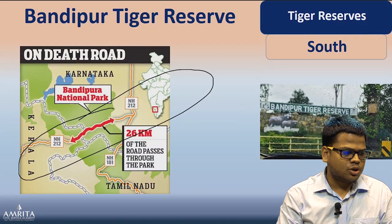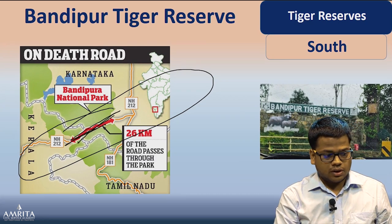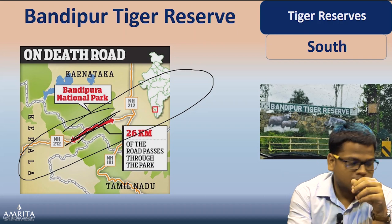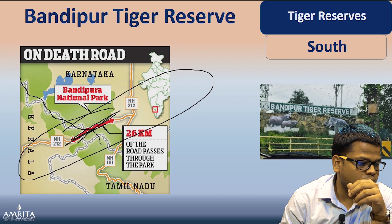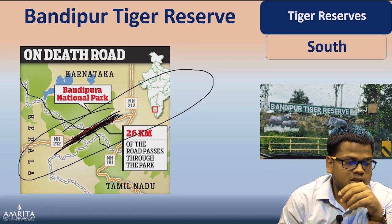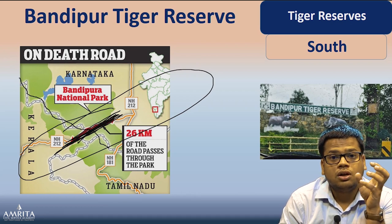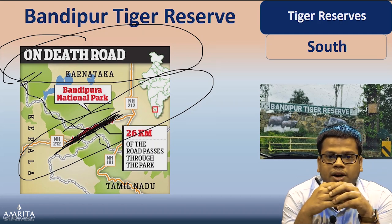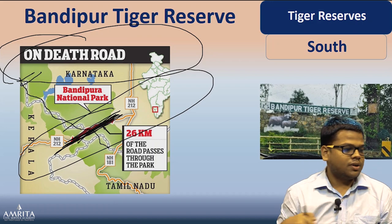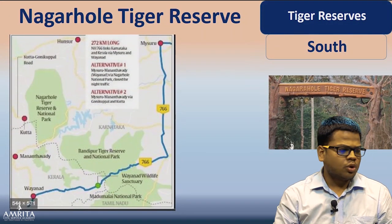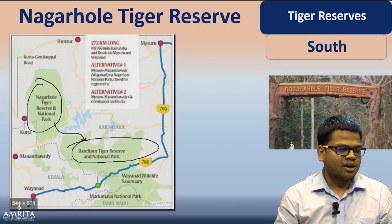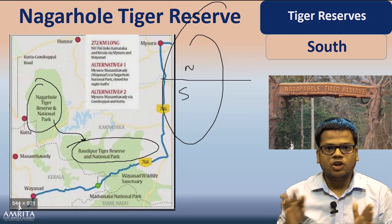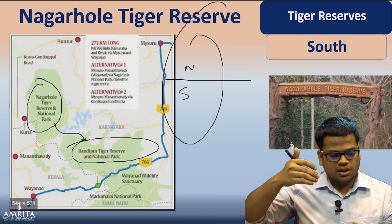A road from Mysore going through Nagarhole and Bandipur is an example of how roads passing through tiger reserves are very harmful for wildlife — causing so many casualties. That is why environmentalists protest against these kinds of development: development and ecology should go in congruence with each other. Now let us move to Nagarhole Tiger Reserve. We have already seen its location — Nagarhole is to the north and Bandipur is to the south of each other.